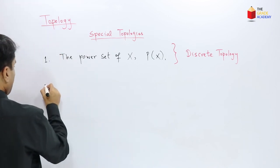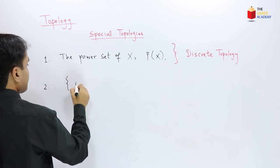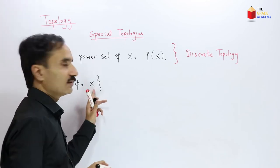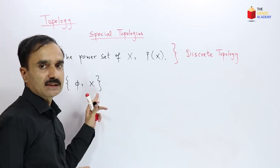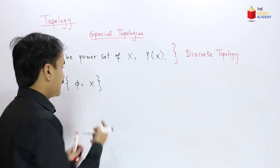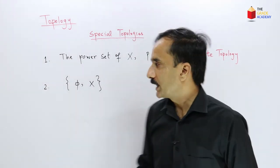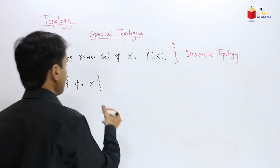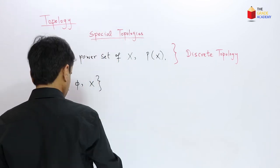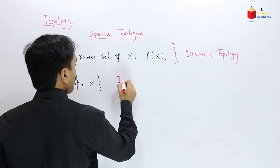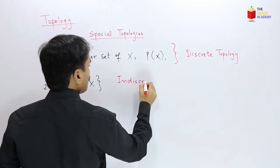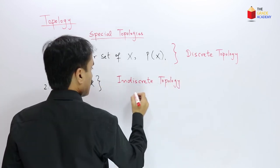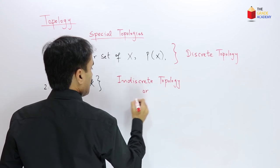There is another type of topology: the set consisting of only the empty set and the set X itself. This set also satisfies the conditions for a topology, so this is also a topology. This special topology is called the indiscrete topology or trivial topology.